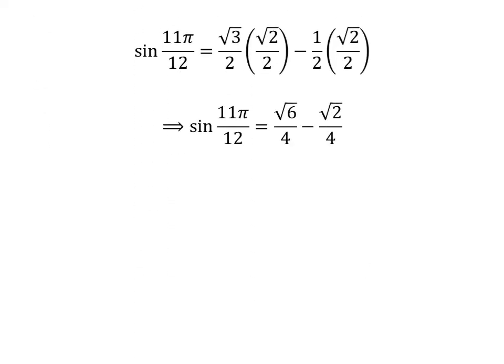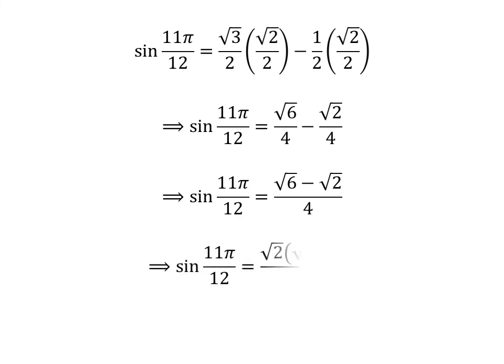Straight multiplication gives us sine of 11 times pi upon 12 is equal to square root of 6 upon 4 minus square root of 2 upon 4. As the denominator of both fractions in the above expression is the same, sine of 11 times pi upon 12 is equal to square root of 6 minus square root of 2 upon 4. Taking out the common factor square root of 2 in the numerator gives us sine of 11 times pi upon 12 is equal to square root of 2 times square root of 3 minus 1 upon 4.